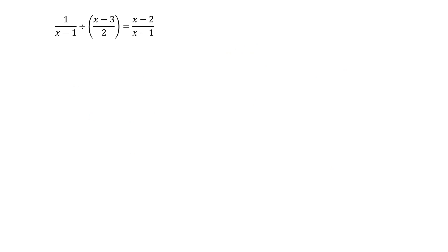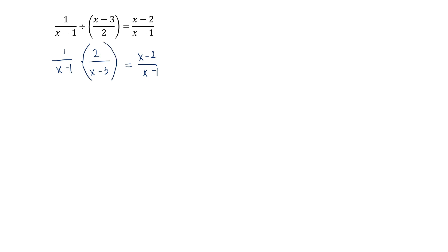For the next given: 1 over (x minus 1) divided by (x minus 3) all over 2, equals (x minus 2) all over (x minus 1). This involves division of rational expressions, so we reciprocate the second fraction and proceed to multiplication: 1 over (x minus 1) times 2 over (x minus 3) equals (x minus 2) over (x minus 1). We eliminate the denominators by multiplying both sides by the LCD.